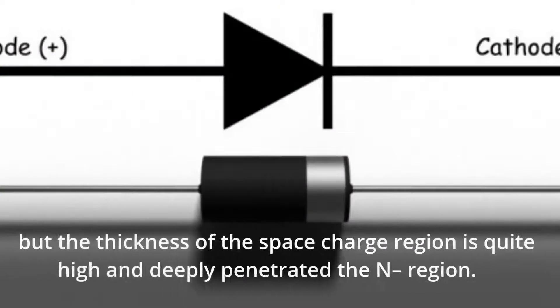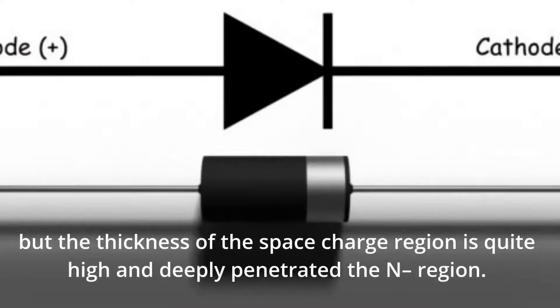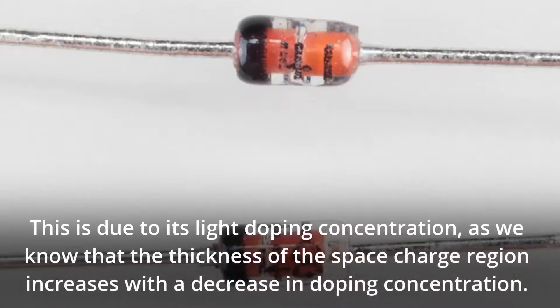But the thickness of the space charge region is quite high and deeply penetrates the N- region. This is due to its light doping concentration, as we know that the thickness of the space charge region increases with a decrease in doping concentration.